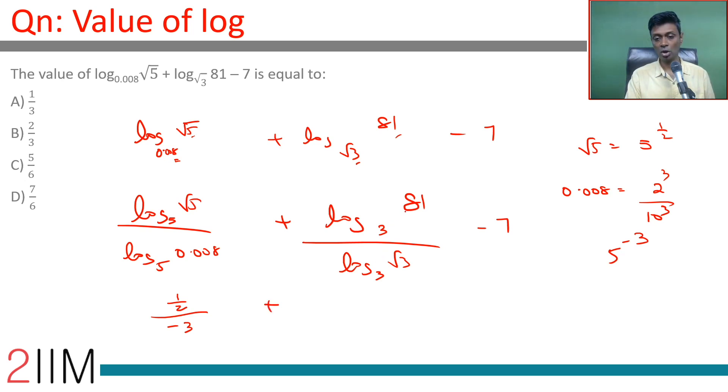Plus log 81 to the base 3 is 4, divided by 1 by 2, minus 7. This is 8, 8 minus 7 is 1. This is minus 1 by 6. This whole thing becomes minus 1 by 6 plus 1 which is 5 by 6.